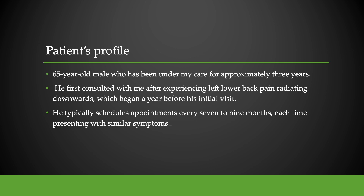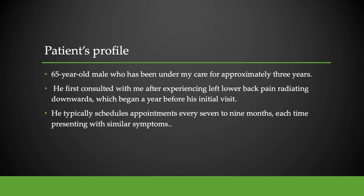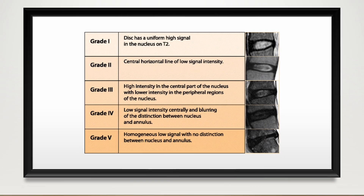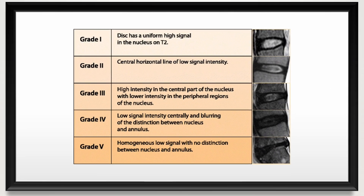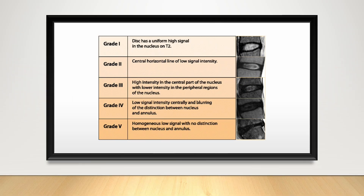Let's review his spinal MRI, conducted three years ago when he first reported pain. Before we describe the MRI grading details of our patient, kindly take a moment to review the table that elucidates how radiologists categorize disc degeneration from grades 1 to 5. It's important to understand that in grade 5, the MRI will showcase homogeneous low signal intensity with the nucleus and annulus appearing indistinguishable from one another.